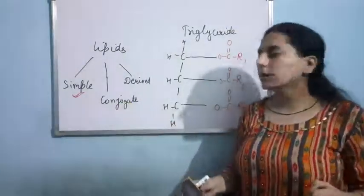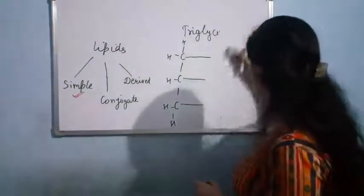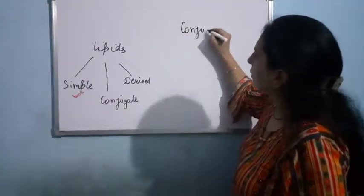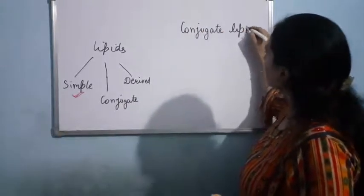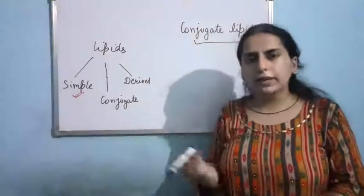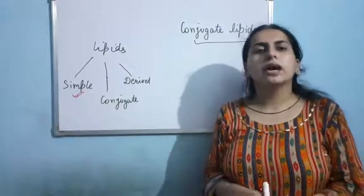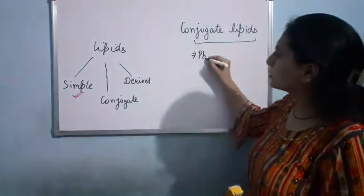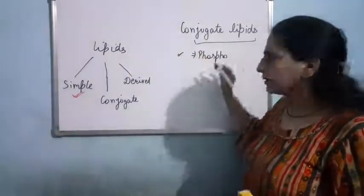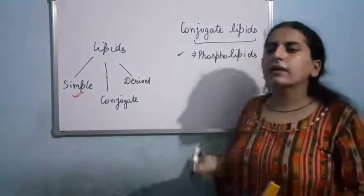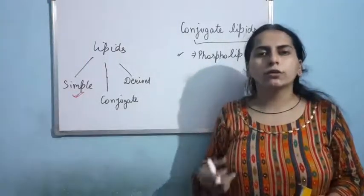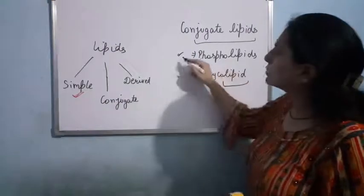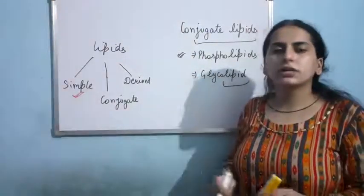Now let us talk about the second topic, conjugate lipids. In conjugate lipids, we have fatty acid and glycerol, but along with that we also have different groups like a phosphate group — in that case it is known as a phospholipid. Conjugate lipids can also be glycolipids. Let me show you how phospholipids are formed so we can understand the definition well.